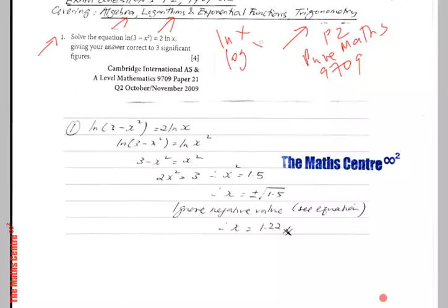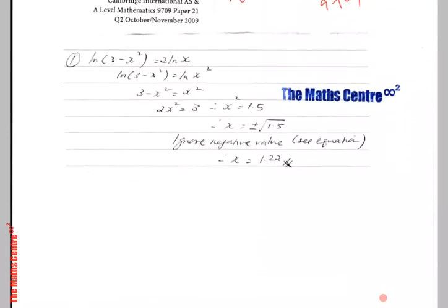So, this is the same thing, log x to base e. We are asked to solve this logarithmic equation, ln(3 - x²) = 2ln(x), giving your answer correct to three significant figures.